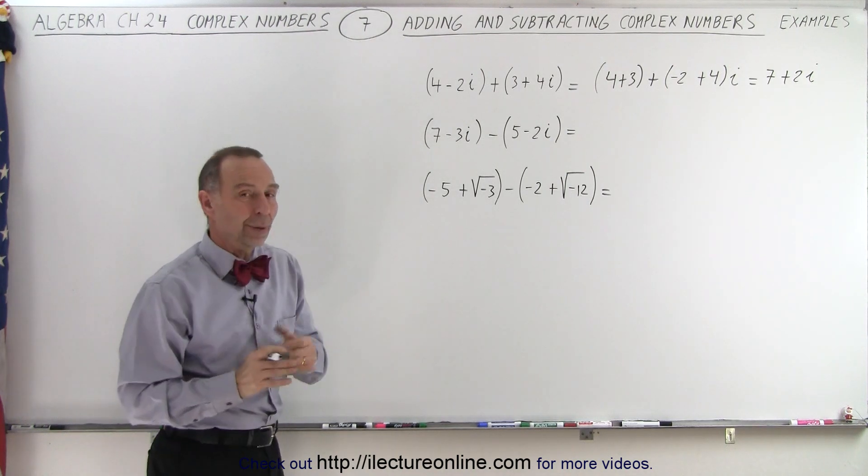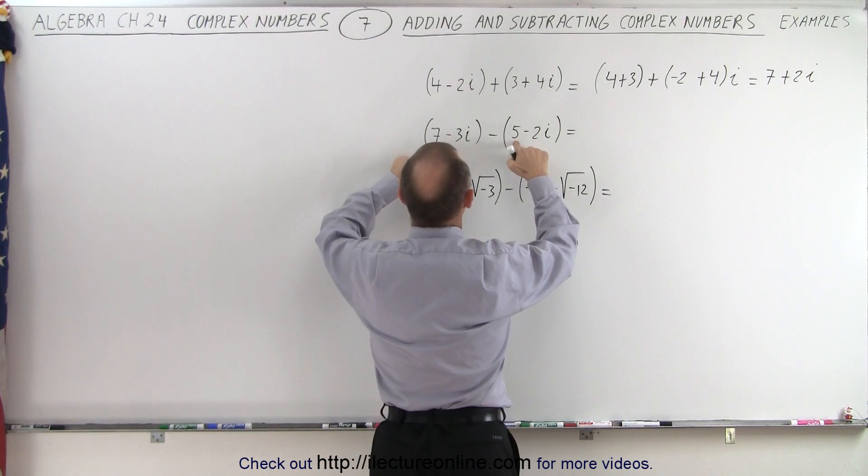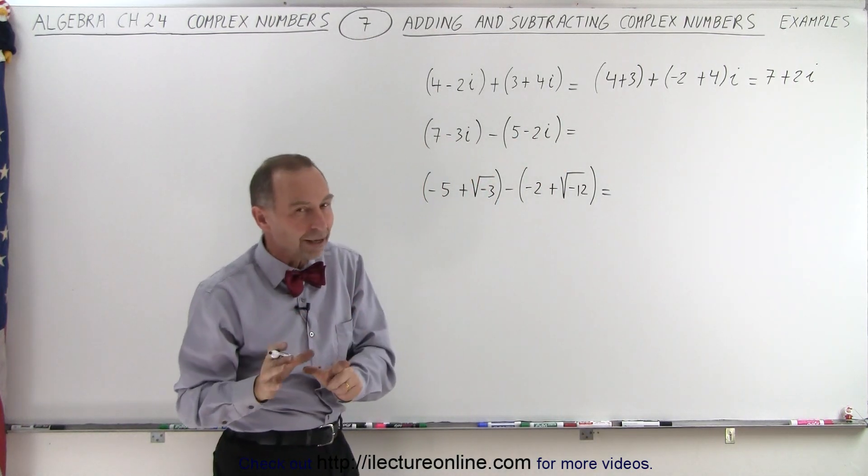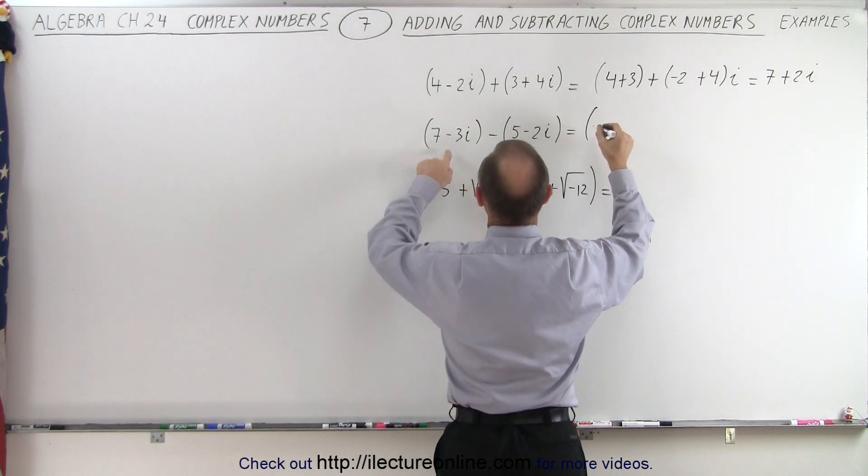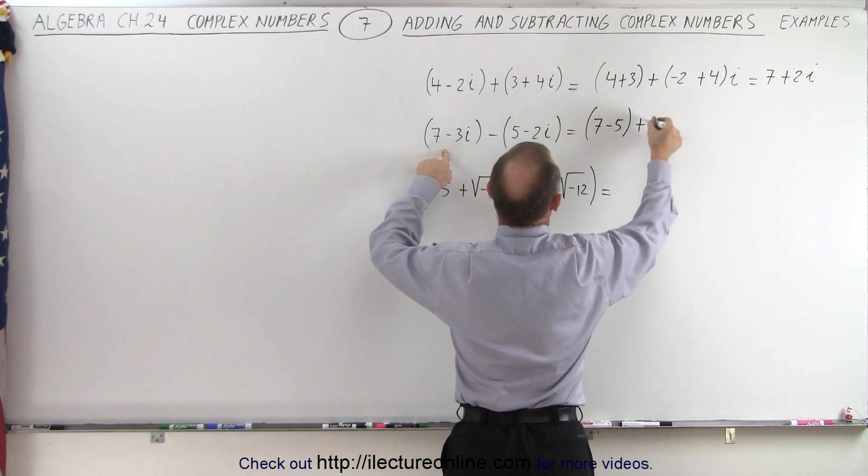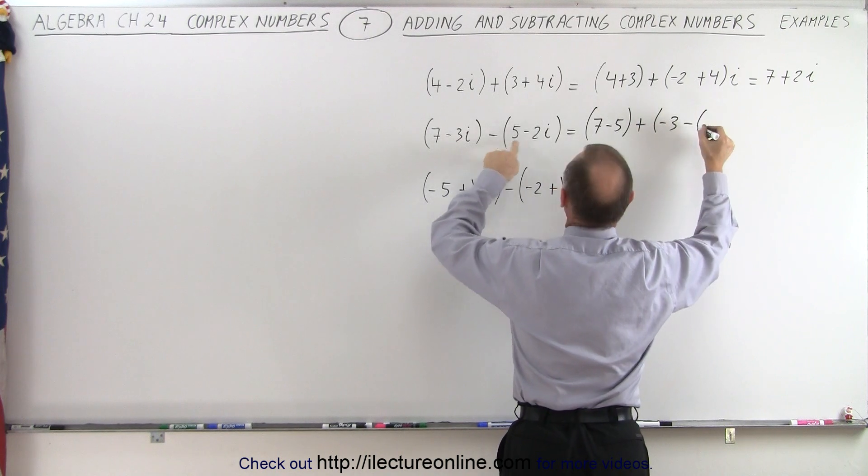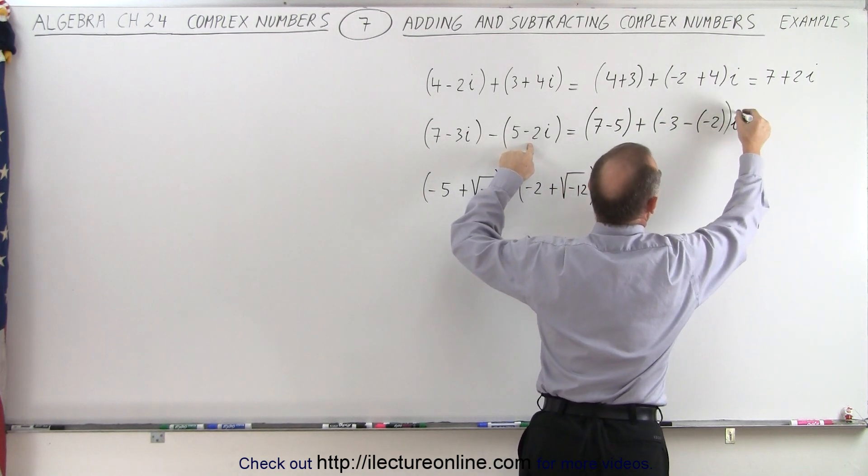How about subtracting? Well, the rules are the same as normal subtracting. We subtract the real parts and the imaginary parts, but we do have to be careful about the signs just like we normally do. So this becomes, that would be 7 minus 5 plus negative 3 minus a minus 2. So that's how I handle the negative signs times i.